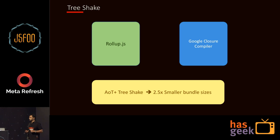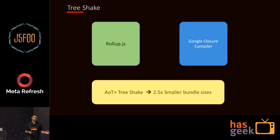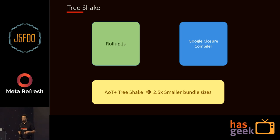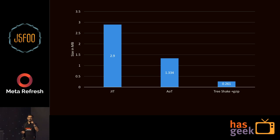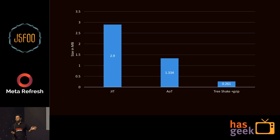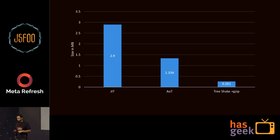Once you're done with AOT, the next step is something called tree shaking. Angular recommends two bundlers you can work with — one is called Rollup, and there have also been experiments using the Google Closure compiler. We were actually struggling to get this working, but some experts got it done and said they were able to get bundle sizes down to about two and a half times smaller. One of my colleagues, Vishwa, managed to get the tree shaking working with gzip. The bundle size moved from about 2.9 MB to about 261K — that's what you can achieve with AOT, tree shaking, and gzip.